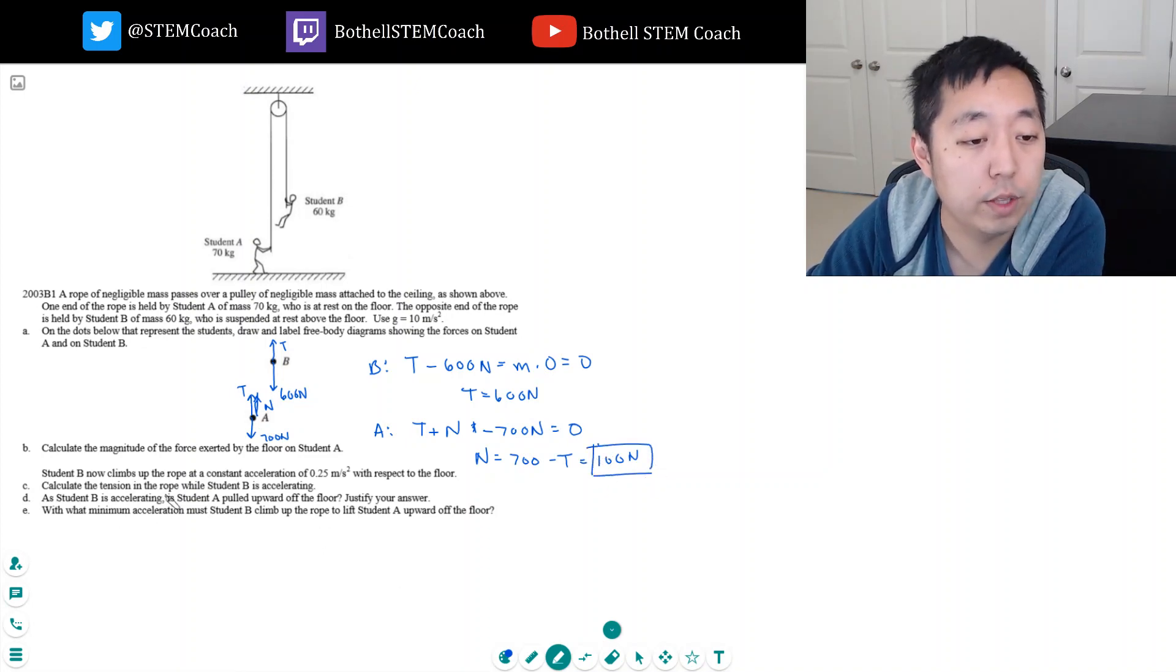Calculate the tension in the rope while, okay, so now student B now climbs the rope at a constant acceleration. So now he's going to start moving up at 0.25 meters per second squared. As student B is accelerating, is student A pulled upward off the floor? Wait, calculate the tension in the rope while student B is accelerating.